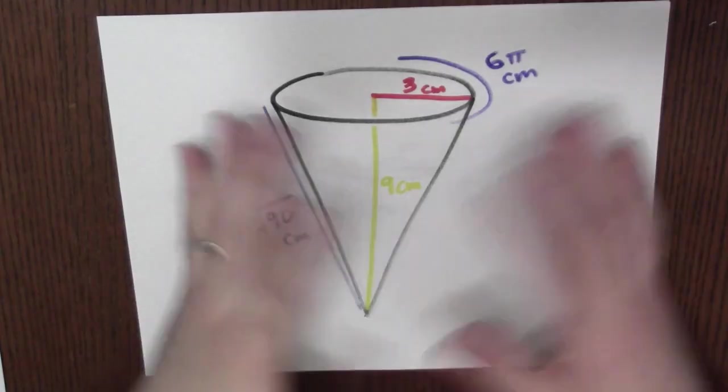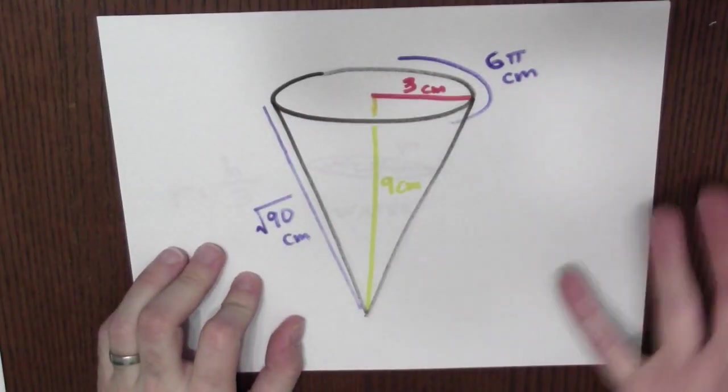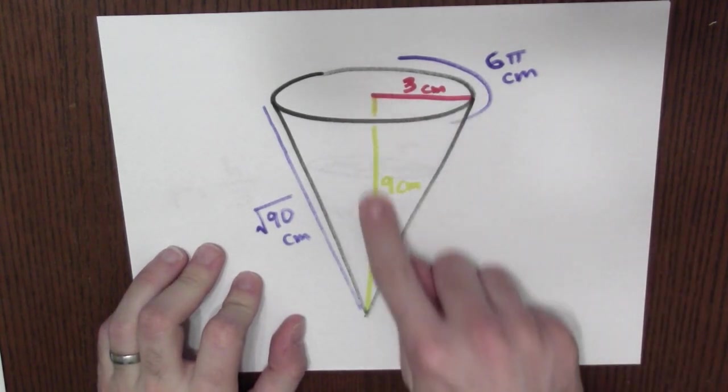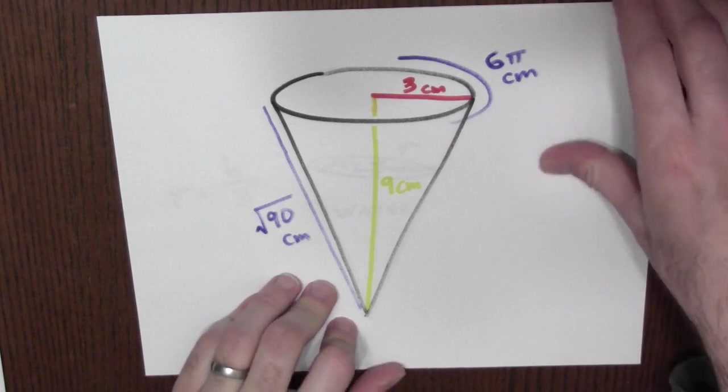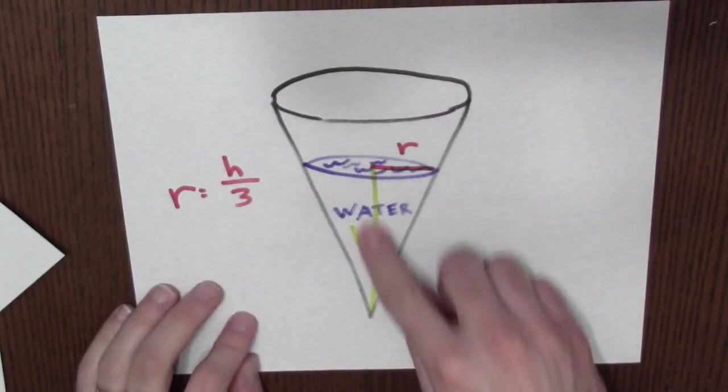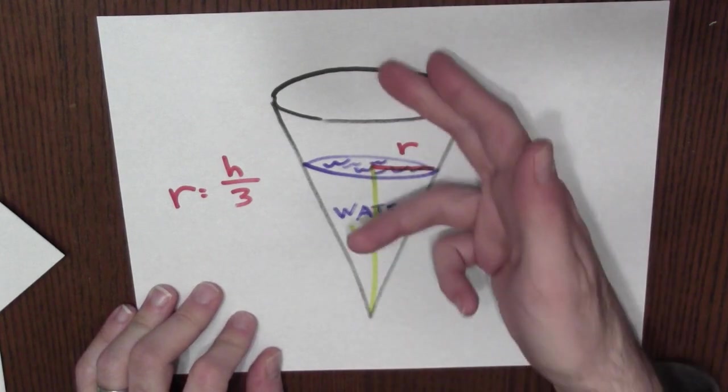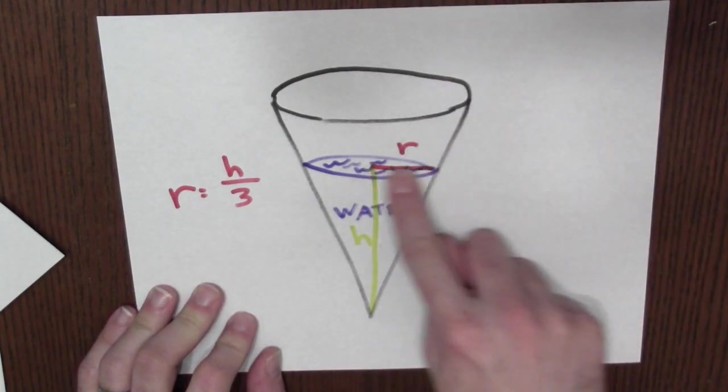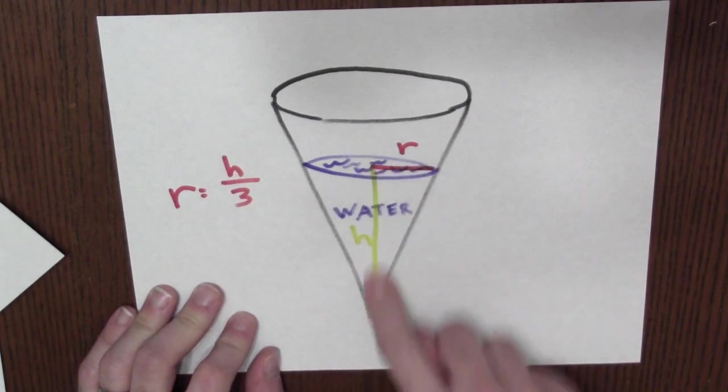The trouble is that there's really two variables here, not just one. Now, if I think back to the original shape of the cone, I can use similar triangles. This big triangle is such that this length is 3 times this length. And the triangle that I get here from the water is similar to that original triangle. And that means that this length here, the radius, must be 1/3 the height.